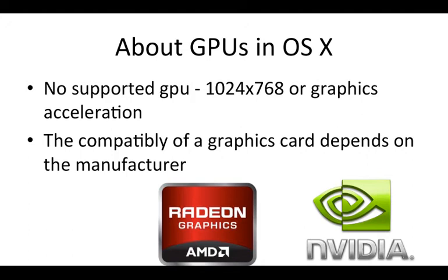This video is going to give you a summary on the series that are generally supported and not supported, but the compatibility of a graphics card really depends on the manufacturer. For example, a GTX 460 from Gigabyte might work fine in OS X, but the same model from ASUS might not. For a definitive answer, I recommend checking one of the Hackintosh wikis to find your specific graphics card and manufacturer.